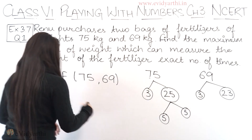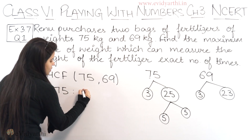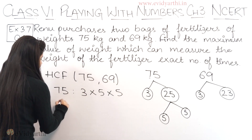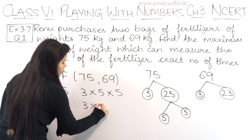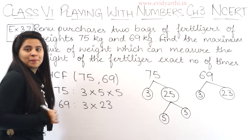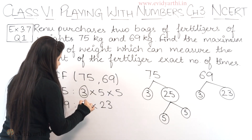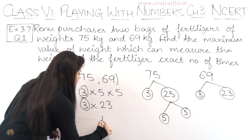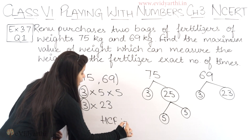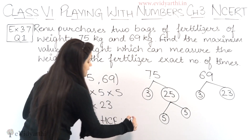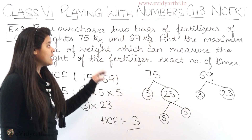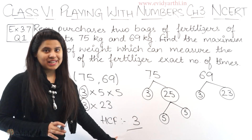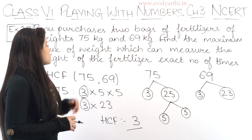Now let's compare the factors. 75 = 3 × 5 × 5, and 69 = 3 × 23. Circling the common factors — only 3 is common between them. This means the highest common factor of 75 and 69 is 3. So the weight that can measure the fertilizers an exact number of times is 3 kg. This was question number 1.